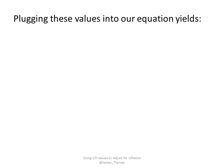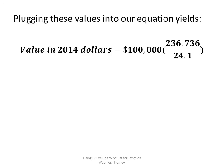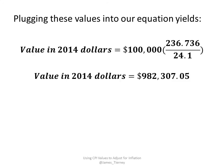Plugging these values into our equation will give us: the value in 2014 dollars is equal to 100,000 multiplied by 236.736 over 24.1. Doing that calculation in a calculator will get us the value in 2014 dollars is equal to $982,307.05.